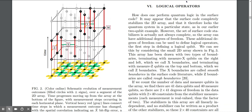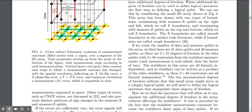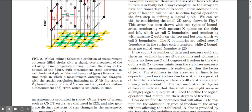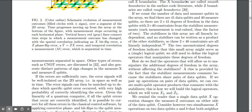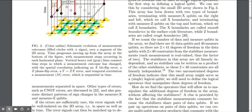Those are operations. So this kind of specifies the connections. Schematic evolution of measurement outcomes. Field circles with plus minus signs over a segment of the 2D array. Time progresses moving up from the array at the bottom. Other types of errors such as CNOT errors also generate distinct patterns of sign changes in the measure X, measure Z qubits.